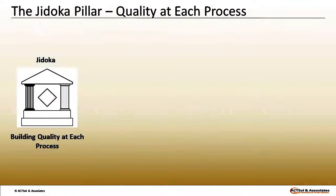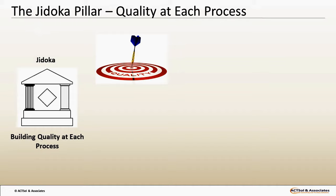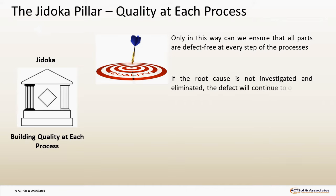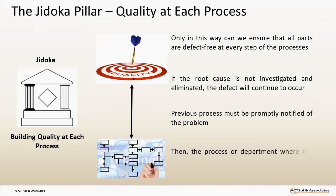Building quality at each process through Jidoka brings the inspector's function into each process so that defects can be uncovered immediately. Only in this way can we ensure that all parts are defect-free at every step of the process. If defects are discovered at the downstream process, it does no good to merely correct them because if the root cause is not investigated and eliminated, the defect will continue to occur. Therefore, the previous process must be promptly notified of the problem. Then, the process or department where the defect originated must immediately investigate the cause and institute measures to prevent recurrences.